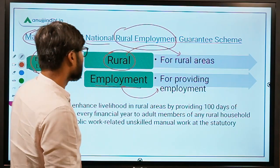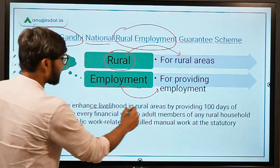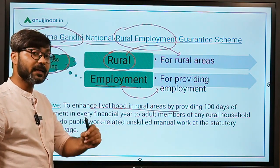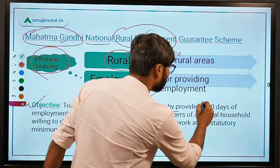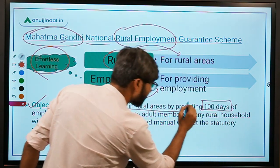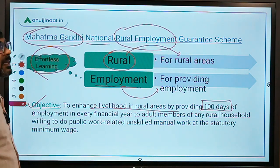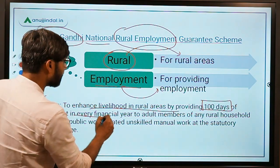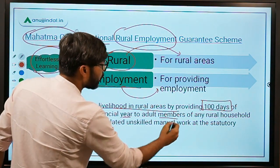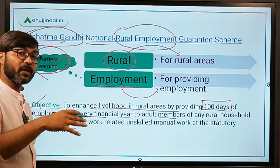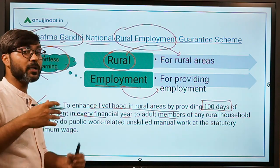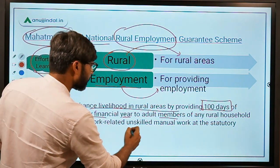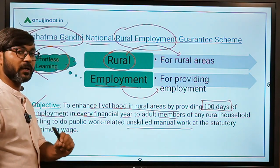The objective is to enhance the livelihood in rural areas by providing 100 days of work in every financial year to adult members of a family who are willing to do unskilled manual work — meaning work where no machinery is involved.